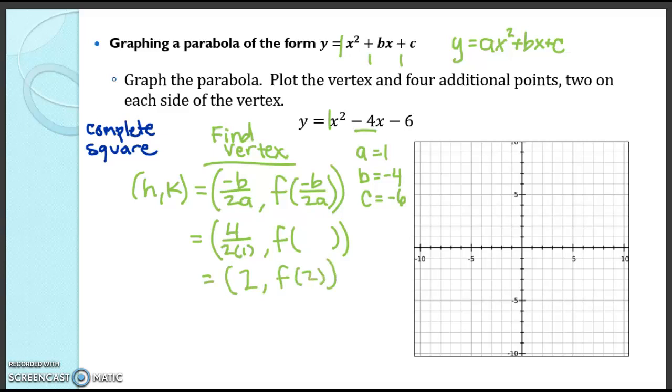So how do we find f of 2? Well, y is our function output. So what's our function output at 2? Let's plug in 2 for x. 2 squared minus 4 times 2, f of 2, rewrite that, minus 6, which ends up being 4 minus 8 minus 6. So what are we going to end up getting for y? We're going to get negative 10 for y.